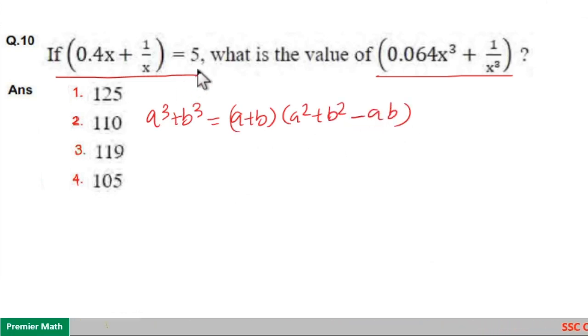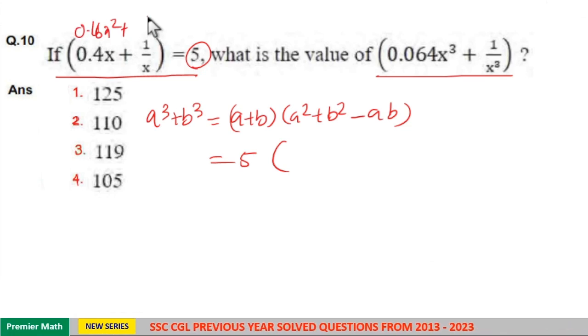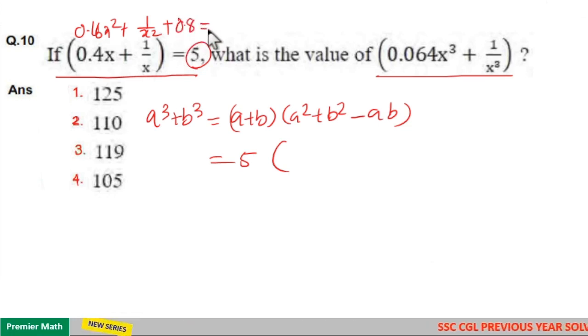Now a + b = 5. For a² + b², we use (a + b)². Squaring gives us 0.16x² + 1/x² + 2(0.4x)(1/x), which equals 0.16x² + 1/x² + 0.8, which equals 5² = 25.